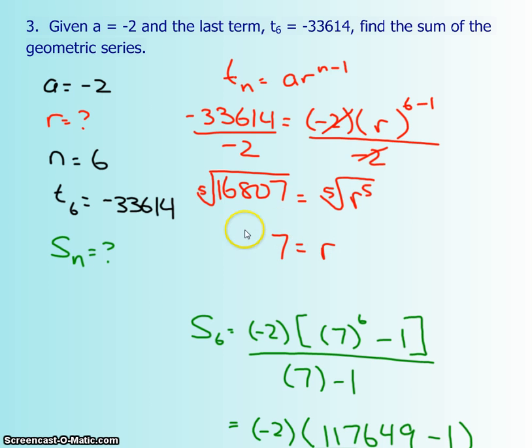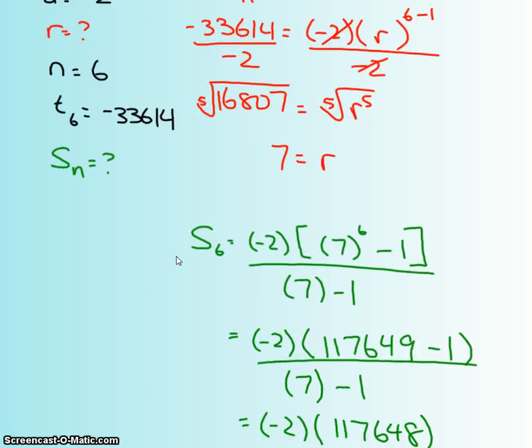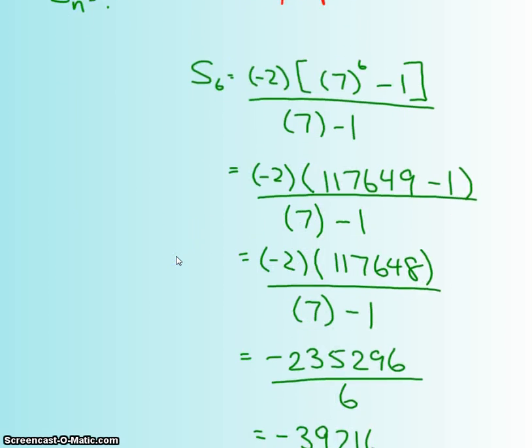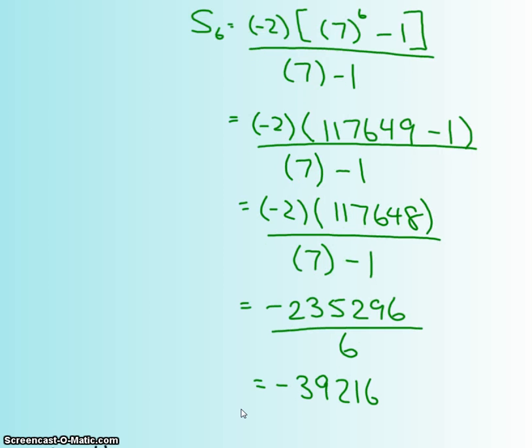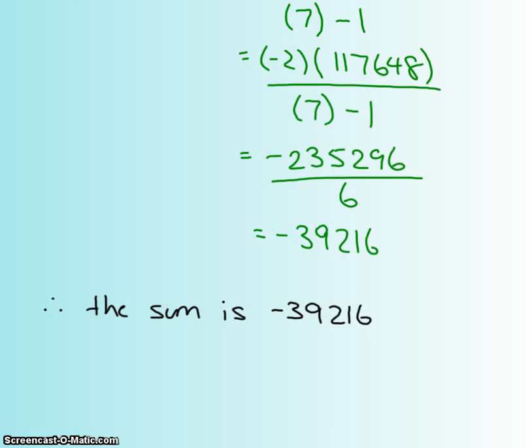Now that we have our rate, we're going to just sub everything into our sn formula for six terms. That means that if I add the first six terms together, it looks like the answer is going to be negative 39,216. I'm hoping I have it there for a statement. Yes, I do. Great.